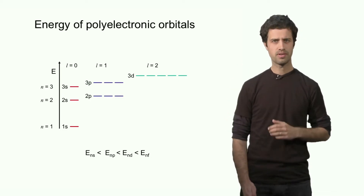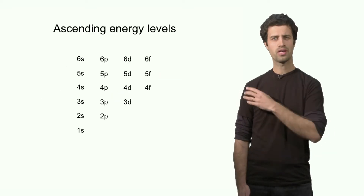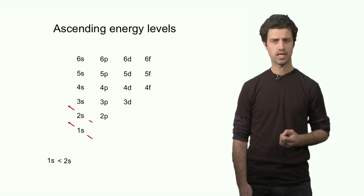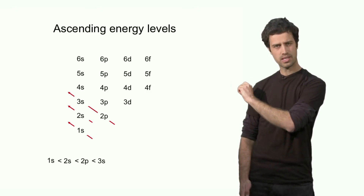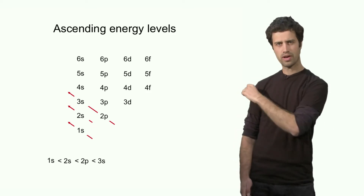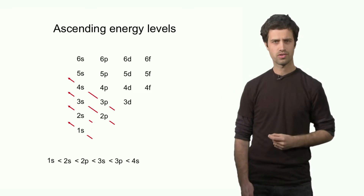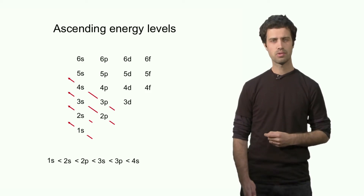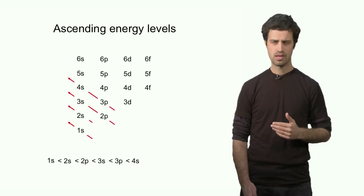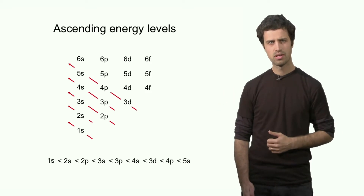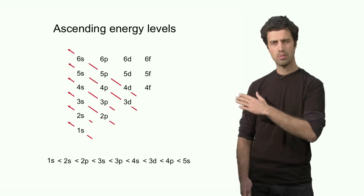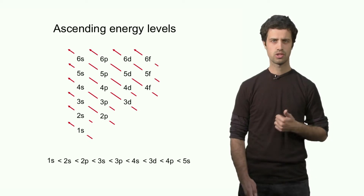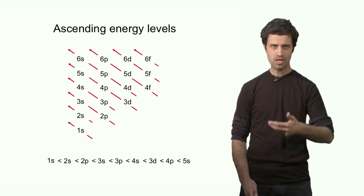The ordering of energies can be very conveniently shown in the following chart. The lowest energy is the 1s orbital. The next is the 2s, and following the arrows, 2p is next, followed by 3s. Following the arrows again, 3p is followed by 4s. This is interesting because 4s has quantum number n equals 4 while 3d has n equals 3, but the 4s orbital has a lower energy than the 3d orbital. The 3d is next, followed by 4p and 5s, and so on, completing the ordering: 1s, 2s, 2p, 3s, 3p, 4s, 3d, 4p, and so forth.